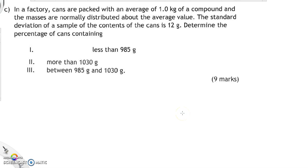In a factory cans are packed with an average of one kilo. One kilo is our average, our mean. The notation used there is x bar equals one kilo. One kilo is the same as a thousand grams. We're changing it to grams because everything else here is in grams. The standard deviation then is 12 grams.